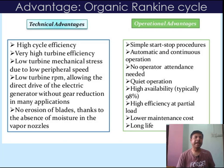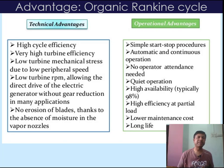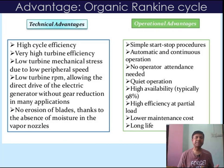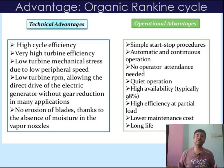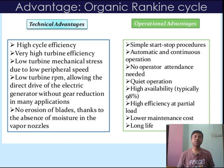The technical advantages include high cycle efficiency, very high turbine efficiency, low turbine mechanical stresses due to low peripheral speed, low turbine RPM allowing direct drive of the electric generator without gear reduction in many applications, and no erosion of blades due to the absence of moisture in the vapour nozzle. The operational advantages are simple start-stop procedures, automatic and continuous operation, no operator attendance required, wide operation range, high availability of around 98%, high efficiency at partial load, low maintenance cost, and longer life.